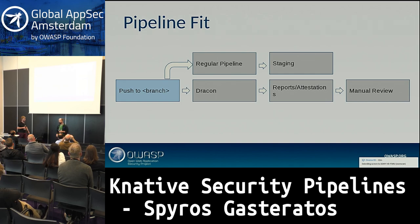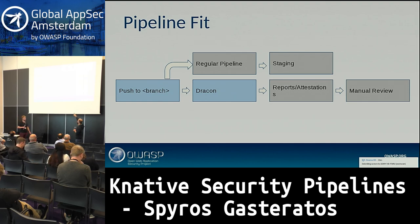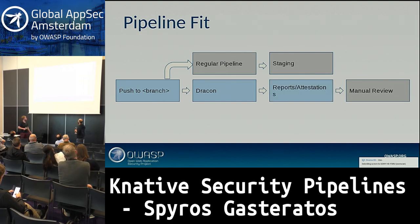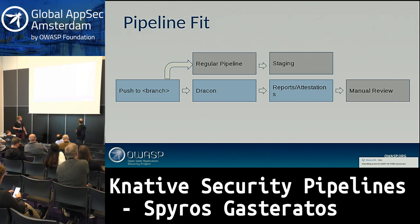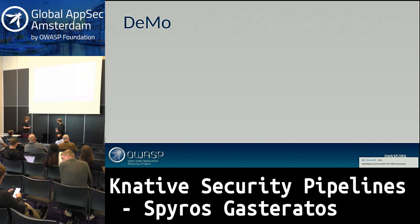We ended up creating a second pipeline and putting Drakon in it — the security pipeline. Somebody pushes to a branch, the regular pipeline does its thing, and then Drakon does its other thing. Afterwards it generates some reports — which internally we call attestations because parts of these reports also reach clients depending on contracts. The reports come to us for manual review, because false positives, duplicates, or any automation in security needs human triage. If you show me a thing that does it automatically, I will be very skeptical.